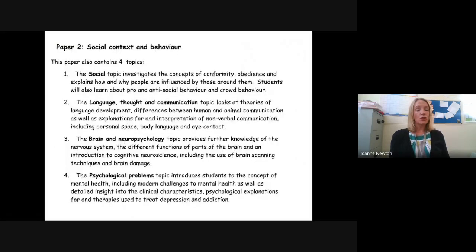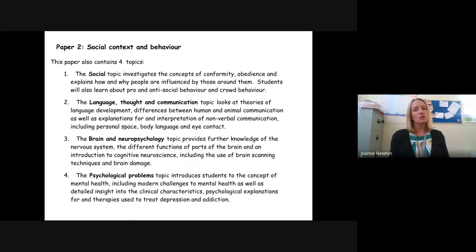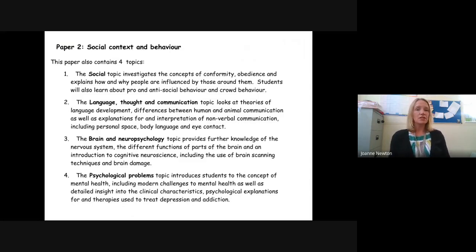Paper two is all about the different contexts of behavior. The first topic is social psychology, where we look at things like conformity — how people behave in a group or crowd, and why people behave differently in a group than they might on their own. We also look at obedience, how people will follow an order even if they think it's morally wrong, and factors that influence whether you would behave pro-socially and help in a situation or become a bystander.